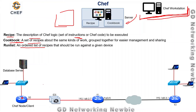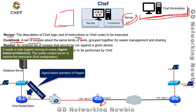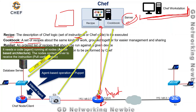Chef works in a client-server model, where the networking devices are the Chef nodes or Chef clients. This is an agent-based architecture, meaning the nodes need some code or agent installed. The devices contact the server and pull the configuration, then implement it — this is called pull configuration. Chef uses HTTP and REST API for pulling instructions from the server.